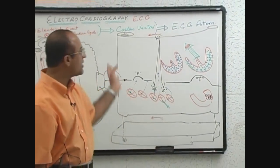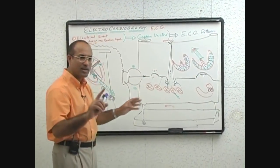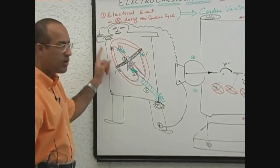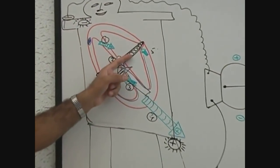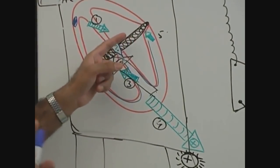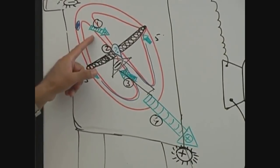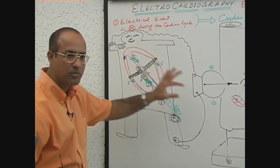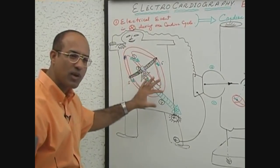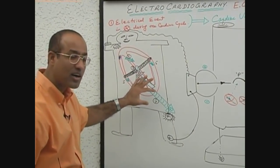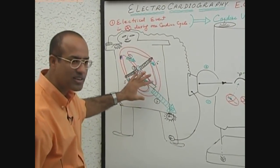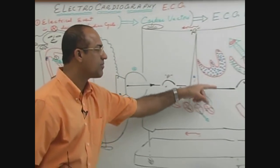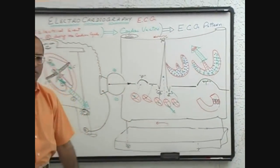In summary, this lecture covered: first, the electrical events during one cardiac cycle; second, how those electrical events produce electrical vectors; and third, how different cardiac vectors produce the ECG pattern.